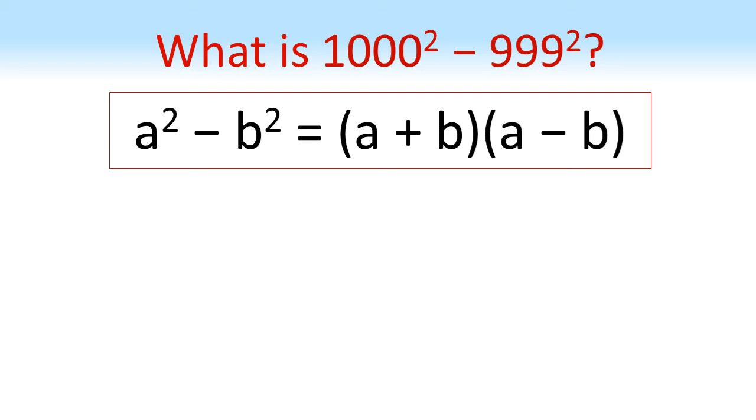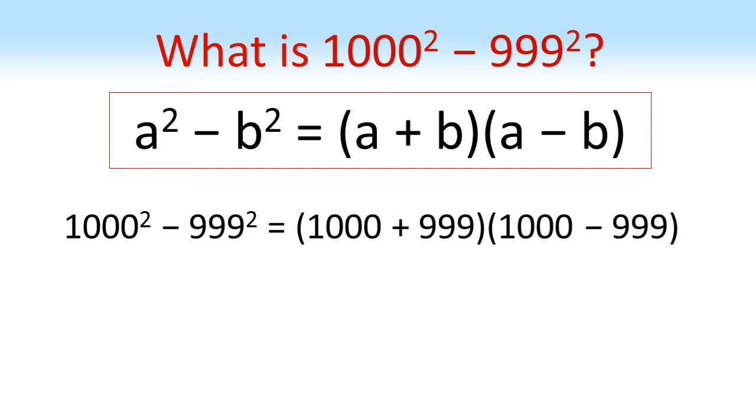Now, replacing the a with a thousand and the b with 999, we get that a thousand squared minus 999 squared is equal to a thousand plus 999 times by a thousand minus 999.